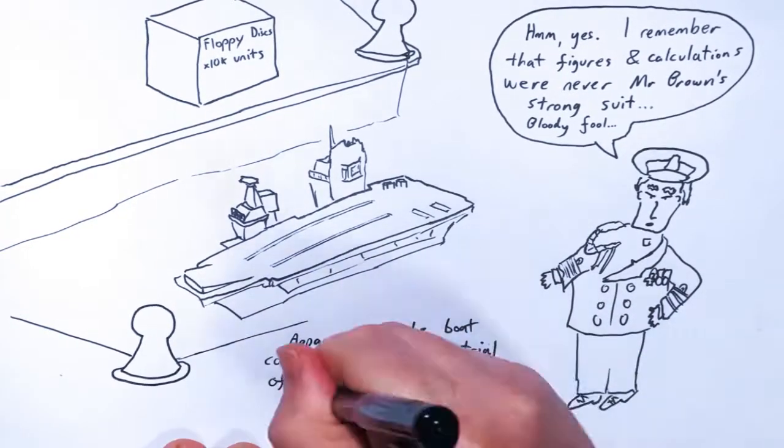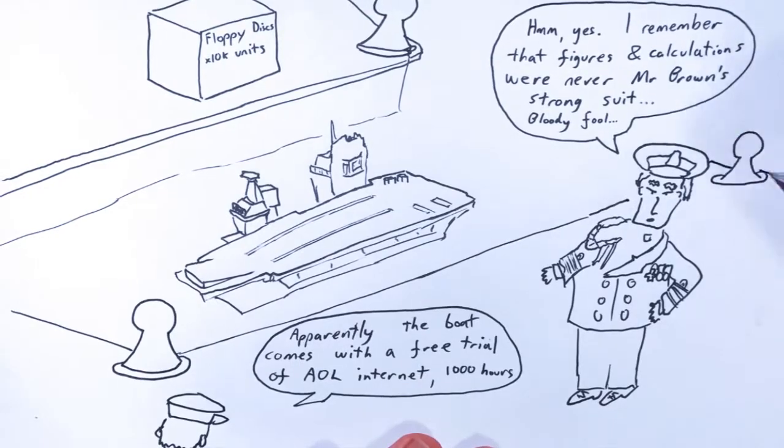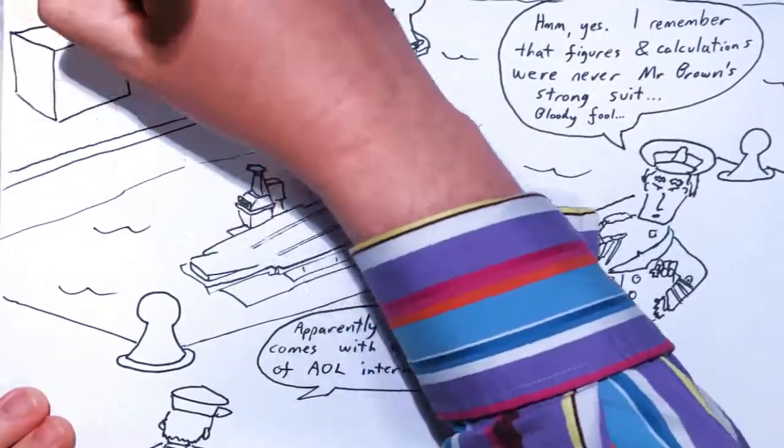But for a reminder of what proper government spending or government waste looks like, let's look at the glorious sight of the new white elephant aircraft carrier HMS Elizabeth, which we got a look at this week.